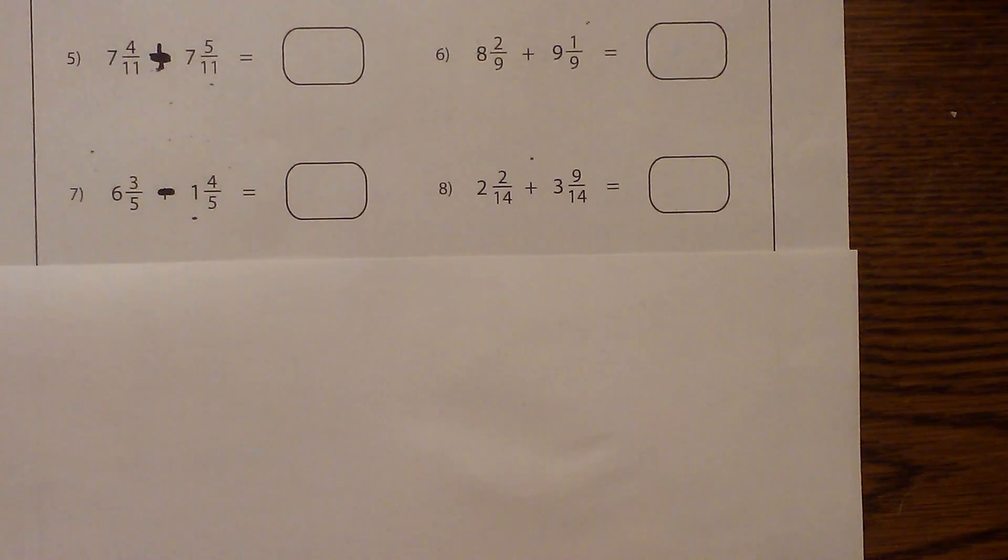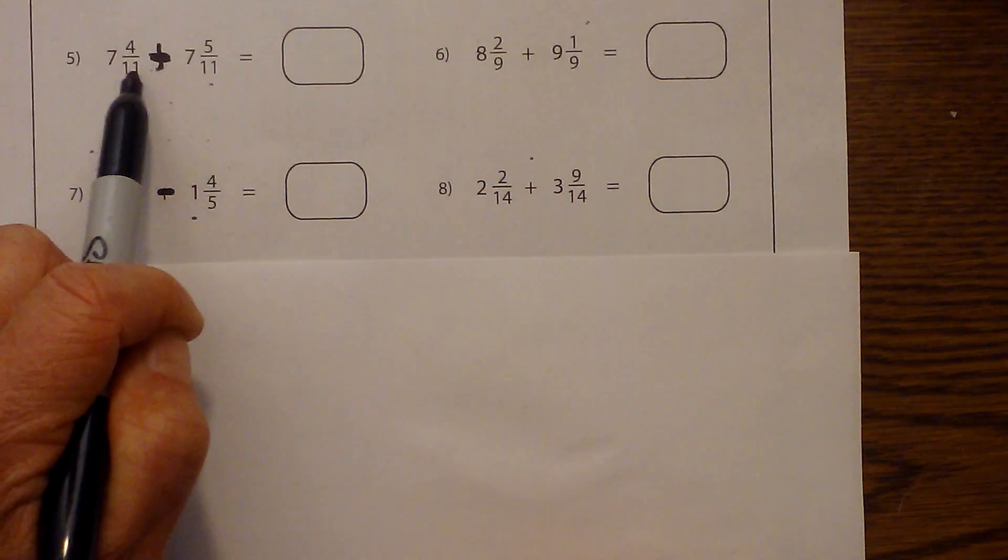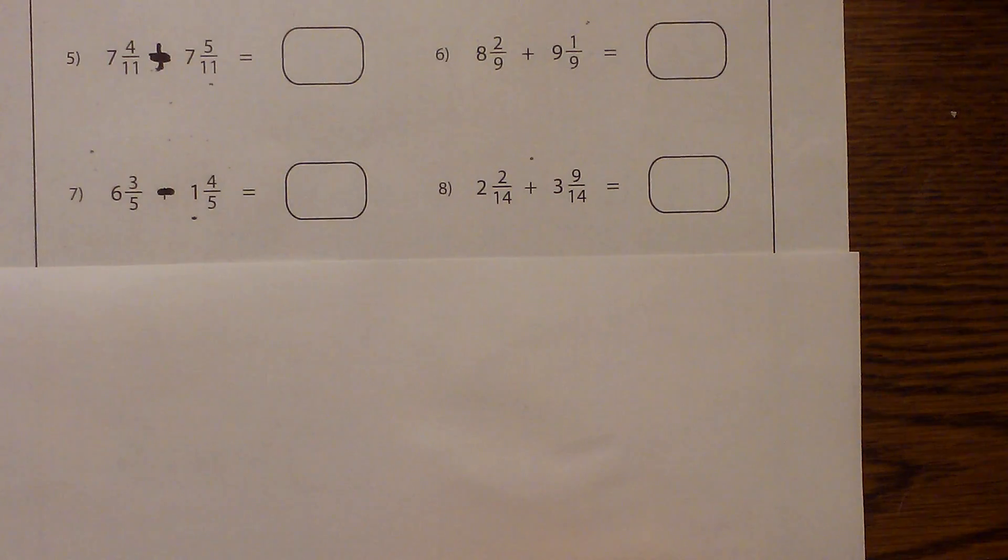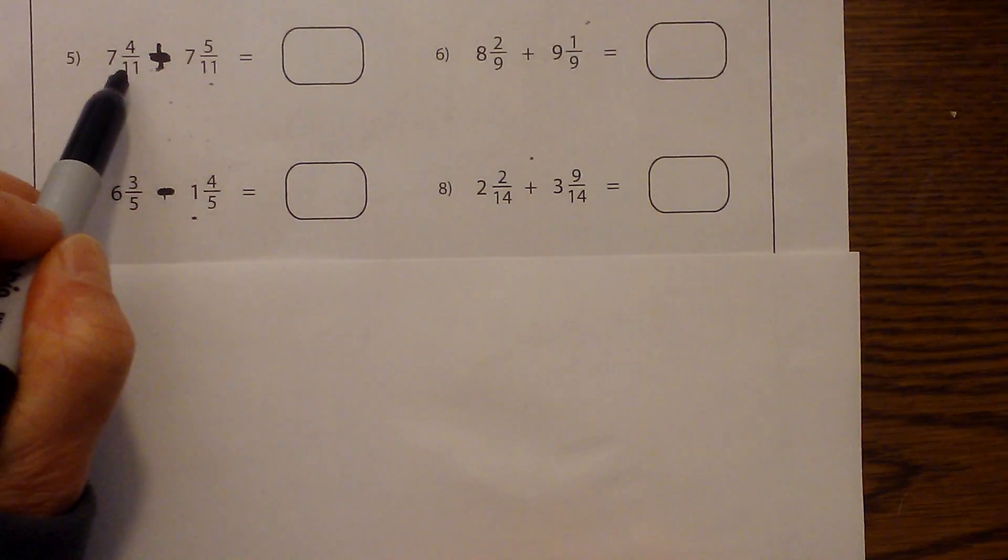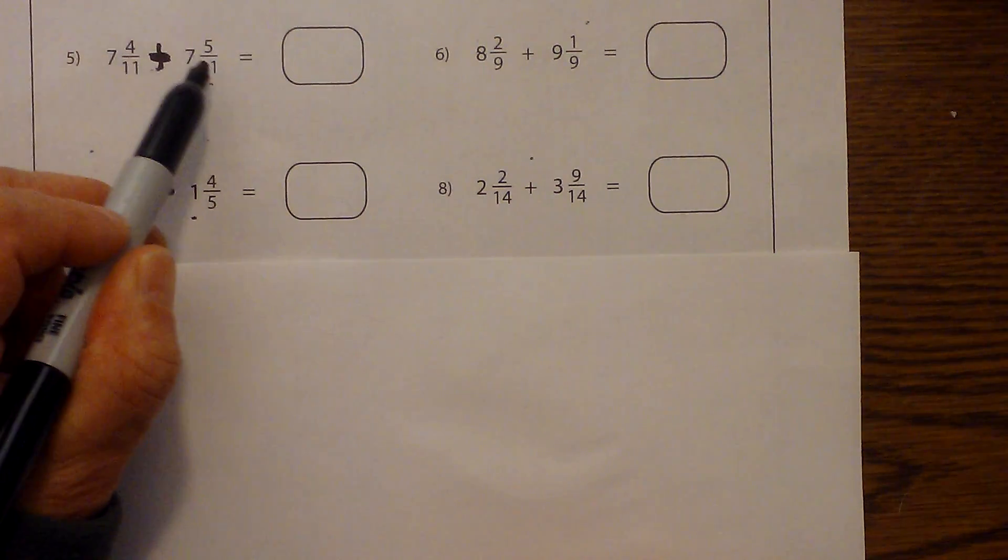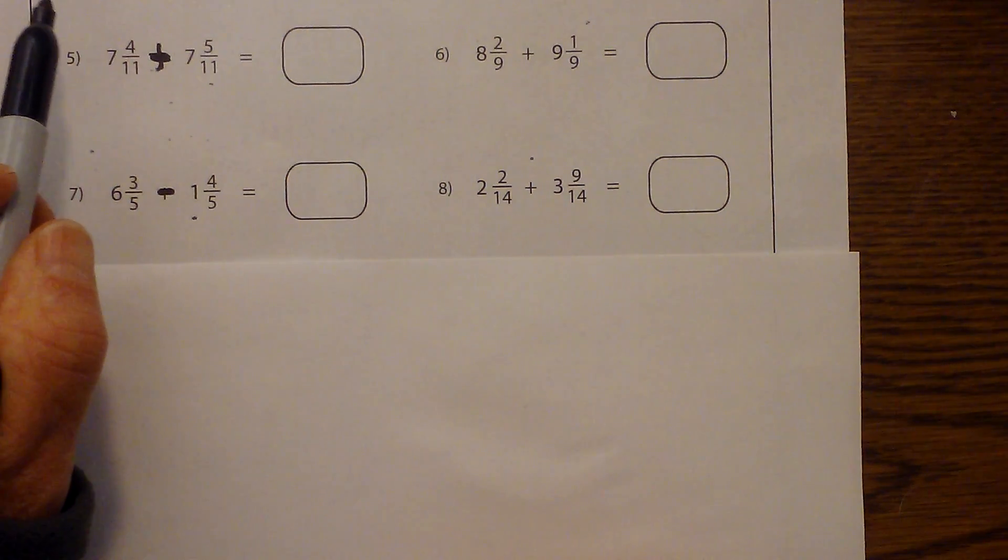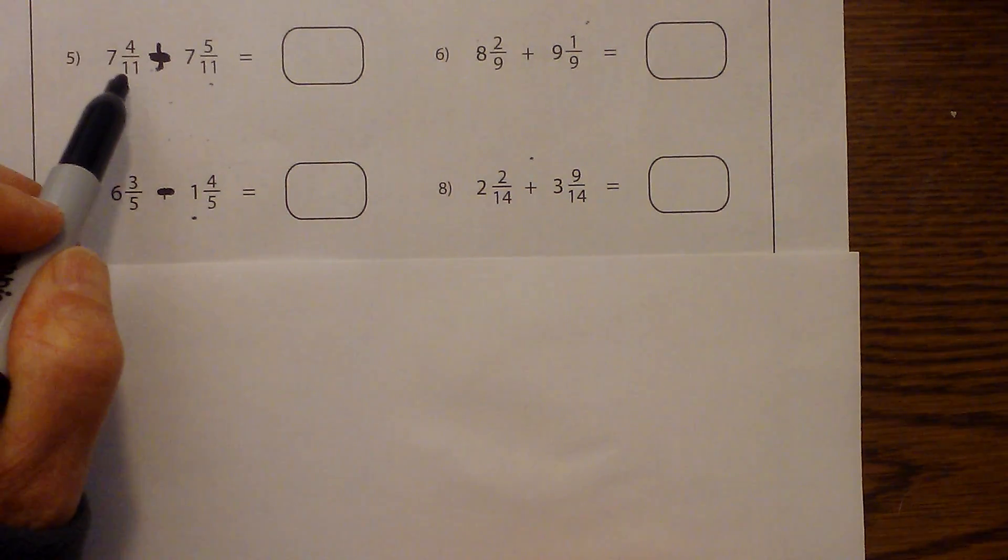In this video I would like to talk about adding and subtracting mixed numbers. These are fairly basic problems because each of them will have common denominators. So let's go ahead and add. Notice that we have common denominators of 11, so we don't need to find one. It's already provided.